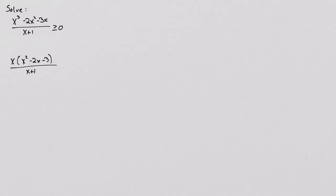Well, x squared minus 2x minus 3 factors. Now this still has to be greater than or equal to 0. But that factors to x times x minus 3 times x plus 1 all over x plus 1.